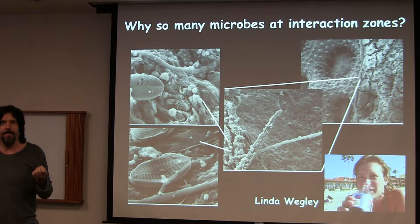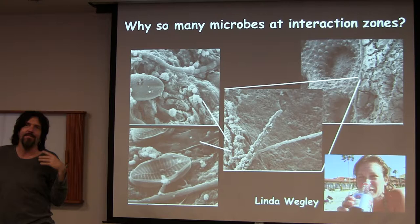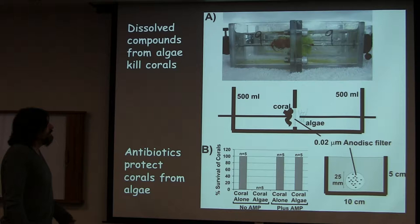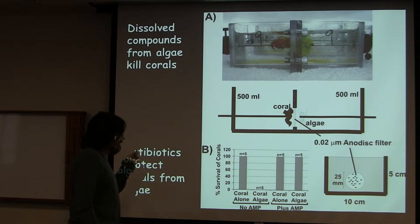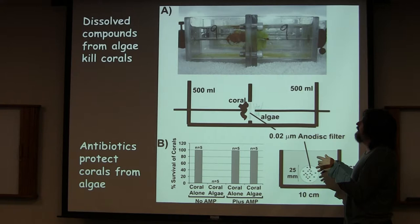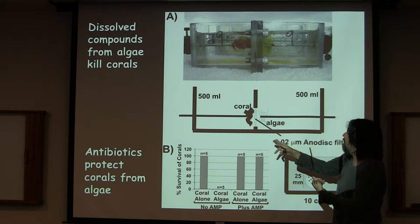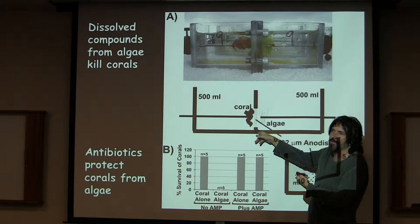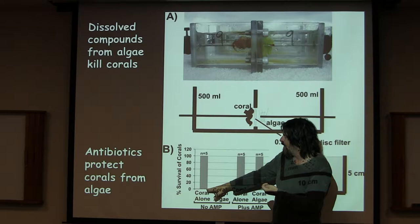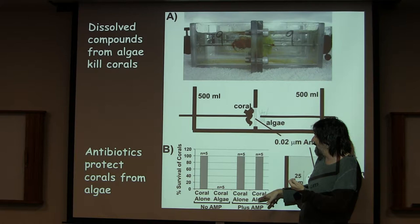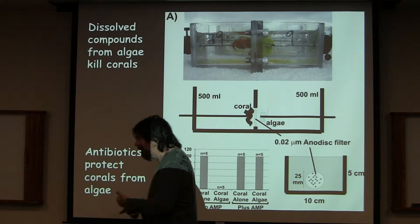It's just like us — if we have bacteria inside of us, that's a bad, bad thing. And that led to this experiment, done on the 2005 One Island experiment. Mark Hattay built these little chambers for us. What we do is put coral across from algae and put a barrier filter between them. When you put coral by itself, it's fine. If you put coral across from algae, it all dies. And then if you do the same thing but add antibiotics, the coral lives. So that tells you that the algae is important for killing the coral and that there's a microbe involved in it.